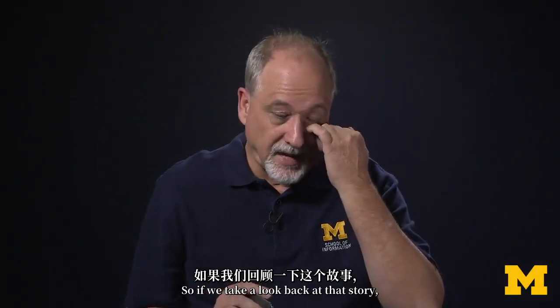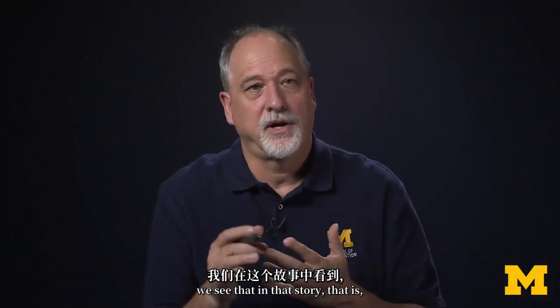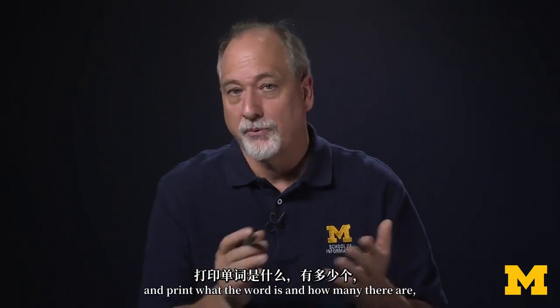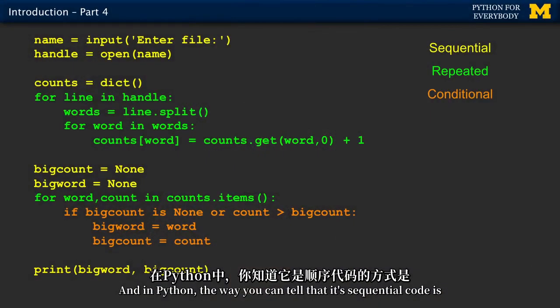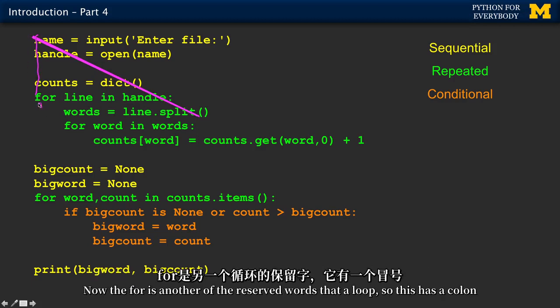So if we take a look back at that story, in that story that is how you count the most common word in a file and print what the word is and how many there are, you find that there's some sequential code. In Python, the way you can tell that it's sequential code is when it's not being indented. It just goes down, down, down. The for is another of the reserved words that are looped.